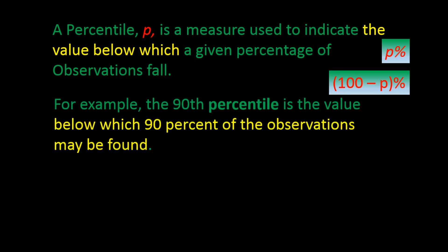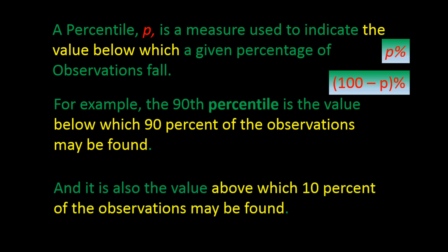For example, the 90th percentile is the value or score below which 90% of the observations are found. So if your score on a test is in the 90th percentile, that means 90% of the grades were lower than yours, or to put it another way, you did better than 90% of those who took the test. And 10% did better than you. We will use the letter P to represent percentile.